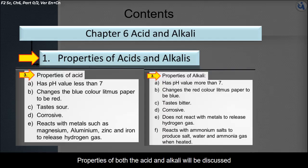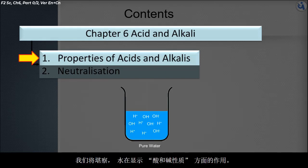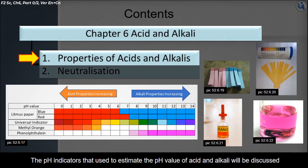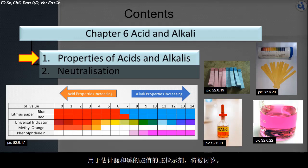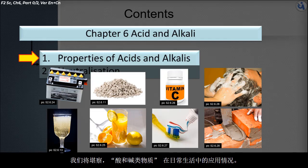Properties of both the acid and alkali will be discussed. 同时，酸和碱的性质将会被讨论。We will check up the role of water in showing the properties of acid and alkali. 我们将勘察水在显示酸和碱性质方面的作用。The pH indicators used to estimate the pH value of acid and alkali will be discussed. 用于估计酸和碱的pH值的pH指示剂将被讨论。We will check up the uses of acids and alkali substances in our daily life. 我们将勘察酸和碱类物质在日常生活中的应用情况。